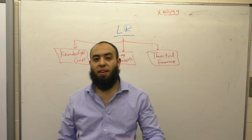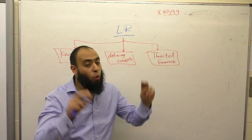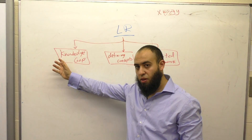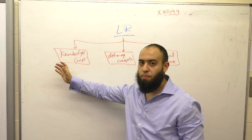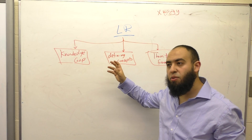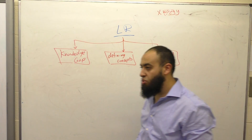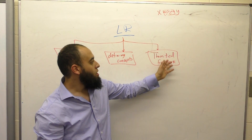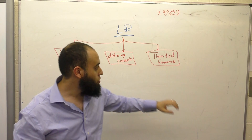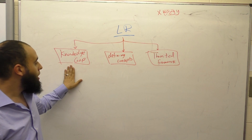Hello everybody, this is my second lecture on how to conduct a literature review. The first one was mainly about why we need to conduct literature review. There were three main reasons: identify knowledge gap, because without it you cannot finish your PhD; defining concepts used in your research, research aim, research objectives; and third, in the case of positive research, how you develop your hypothesis from the literature review.